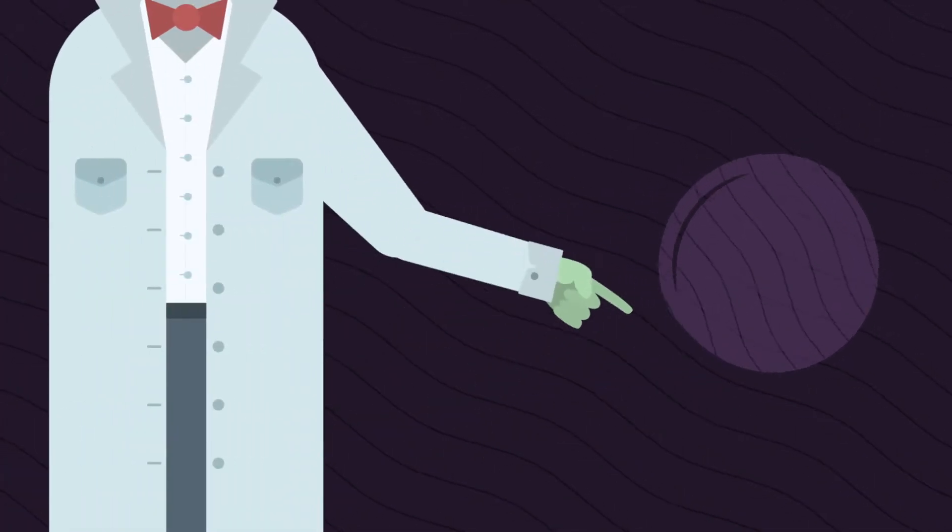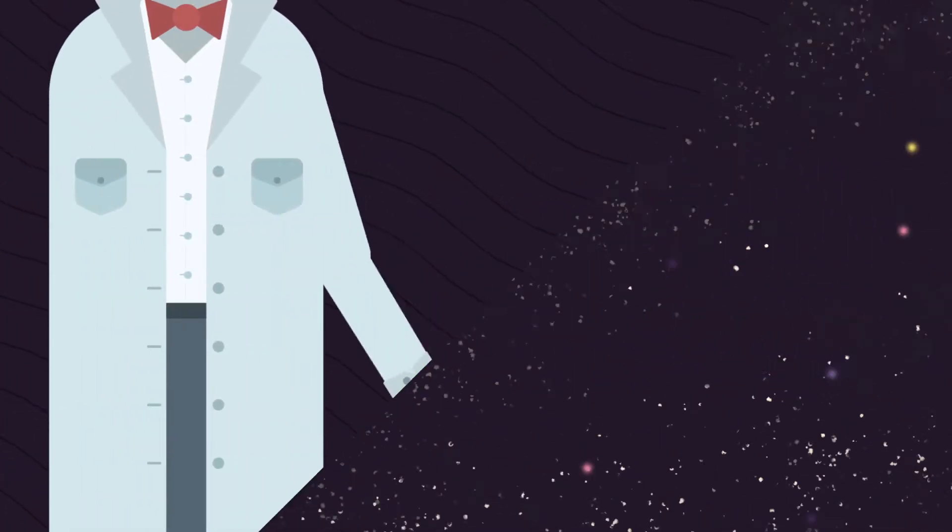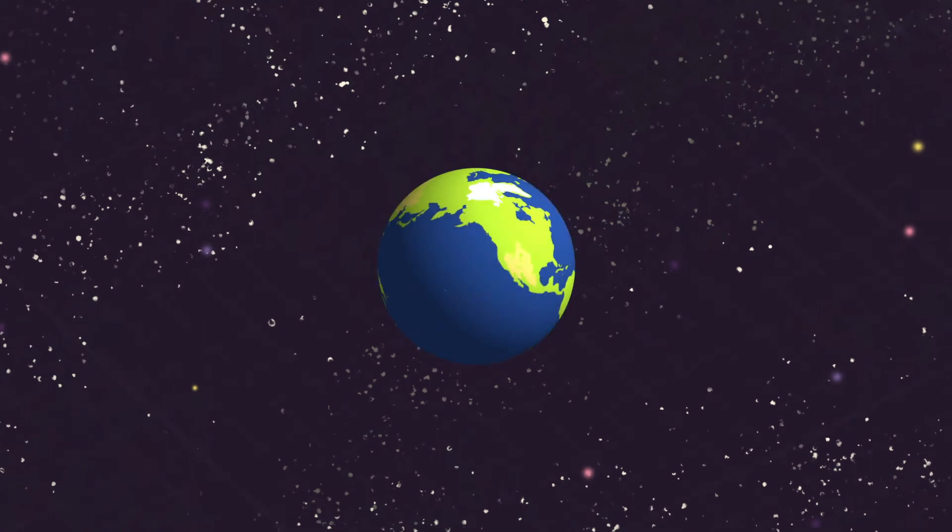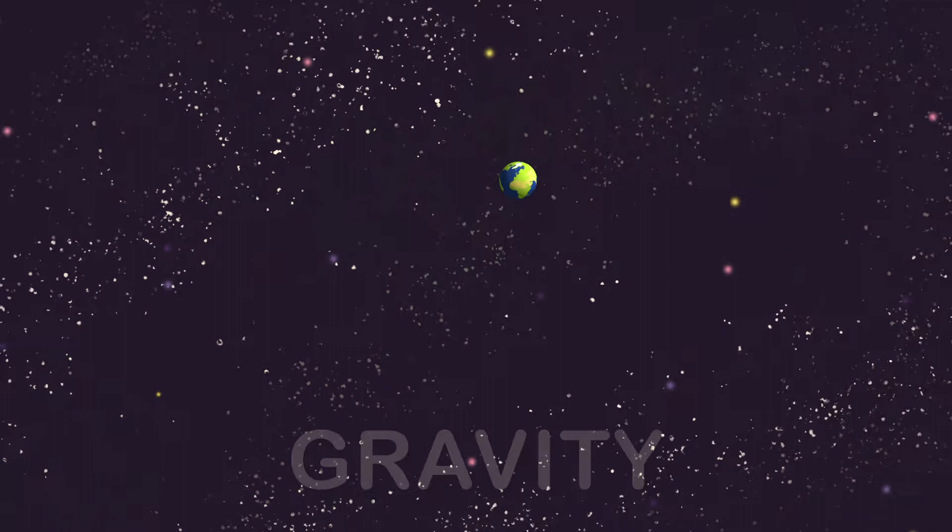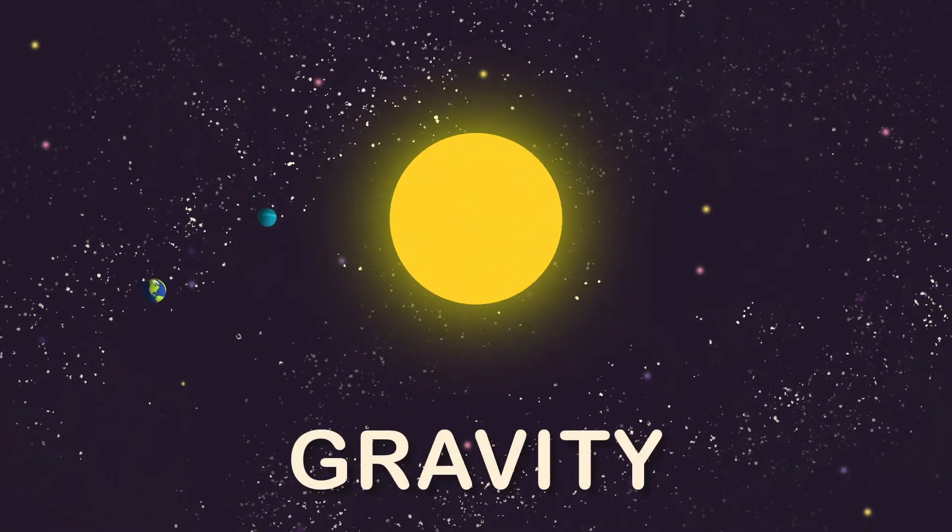So if we can't see dark matter, what makes scientists believe it's there? It all has to do with another property of matter, the effect it has on other matter in the universe. We call this phenomenon gravity, and experience it as the pull that the mass of the Sun exerts on the planets around it, keeping the Earth in orbit.